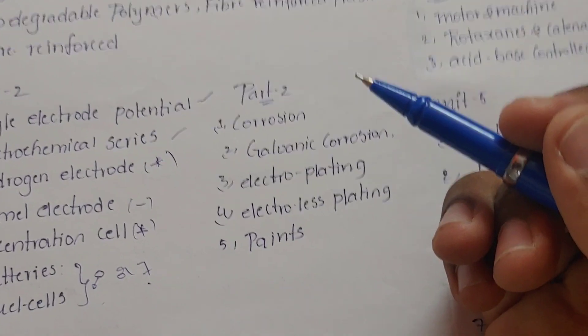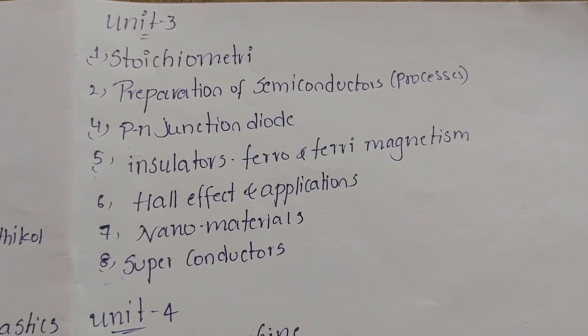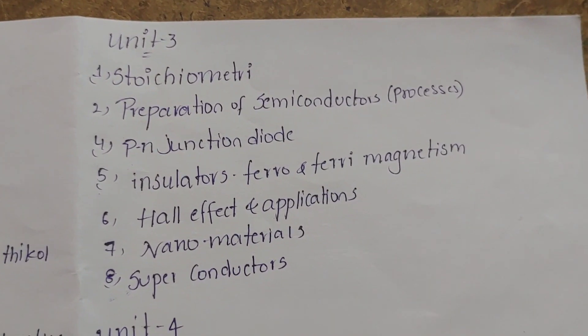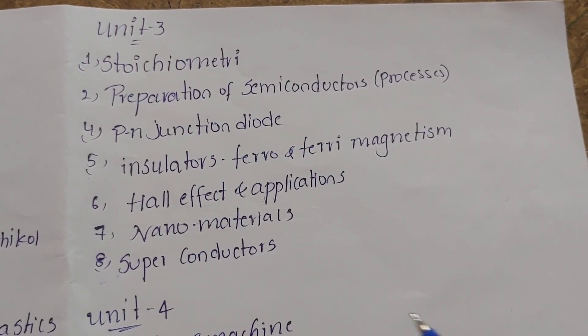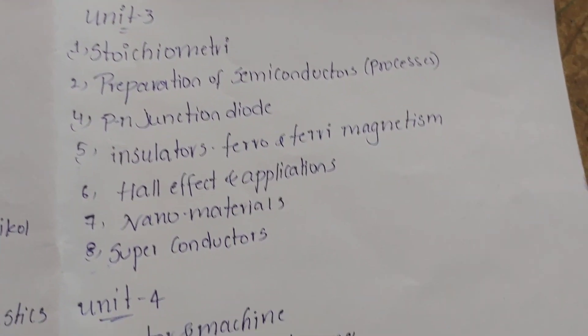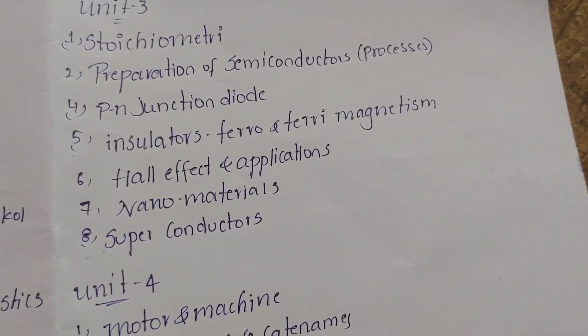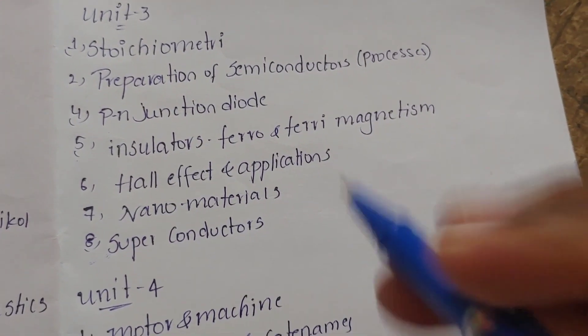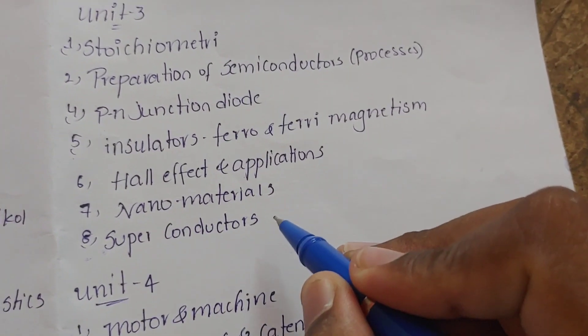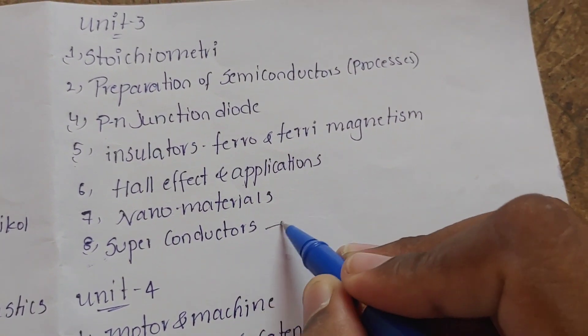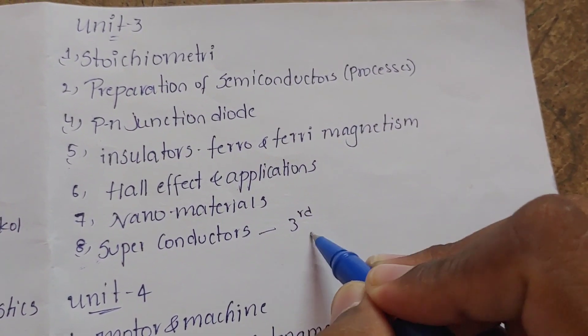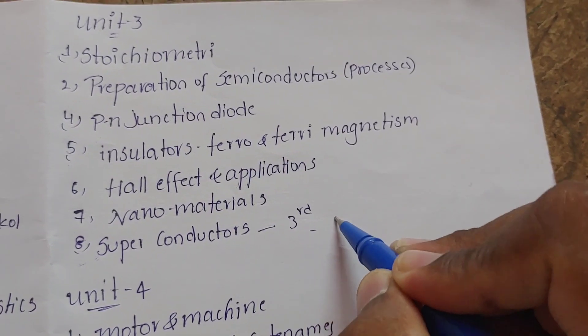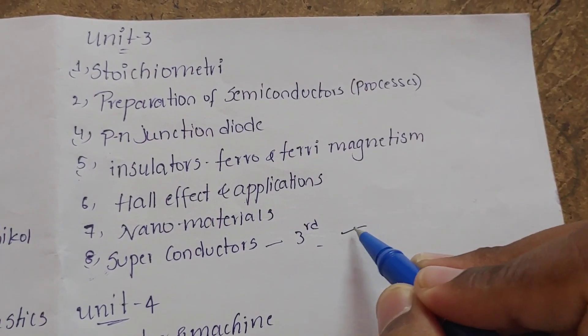Coming to Unit 3 — the main topic is superconductors. There are 3 types of superconductors: Type 1, Type 2, and Type 3.